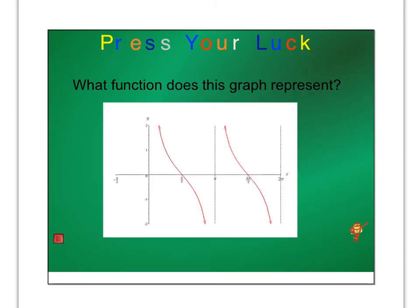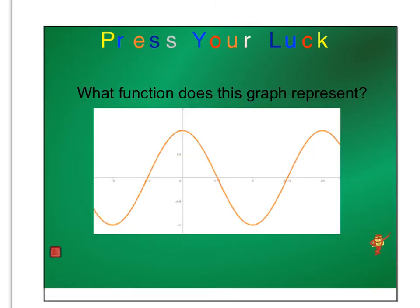What function does this graph represent? Starts on the left up above and works its way down to the right. This is cotangent, y equals cotangent x. What function does this graph represent? You can see right here, it starts 1 above the x-axis, goes to 0, goes to negative 1, back to 0, back to positive 1. This one is y equals cosine x. It starts above the midline.